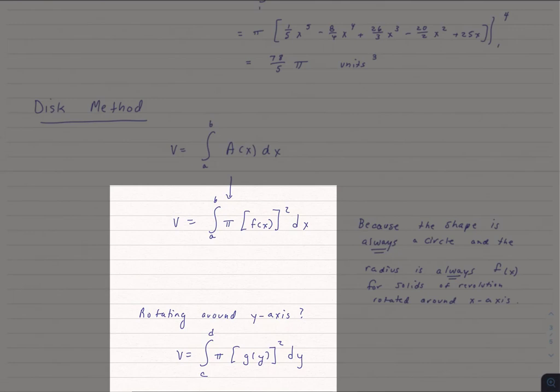So if I have something rotated around the x-axis, it will be from a to b, the integral of pi times fx squared dx. If I'm rotating around the y-axis, then I go from c to d.